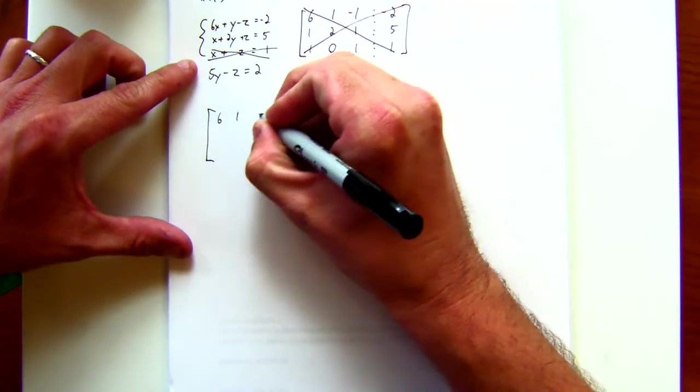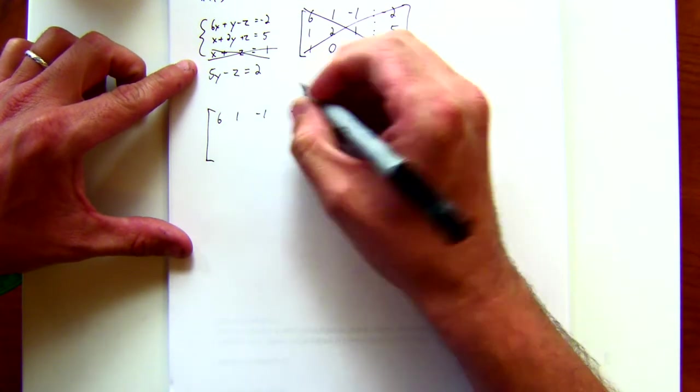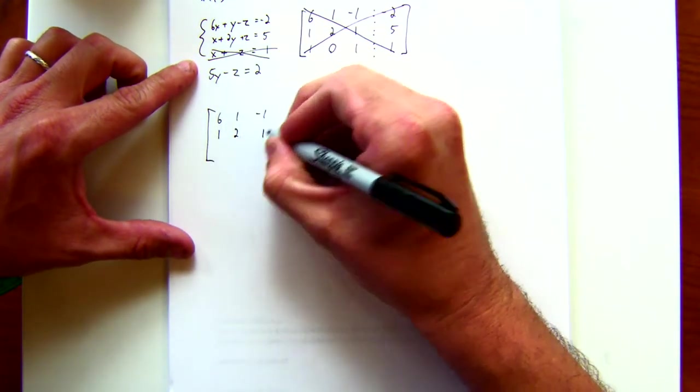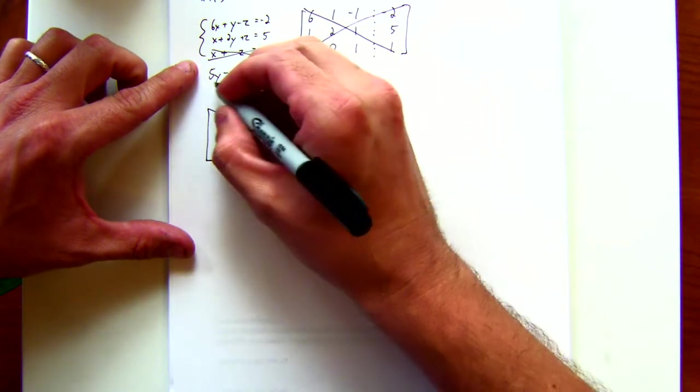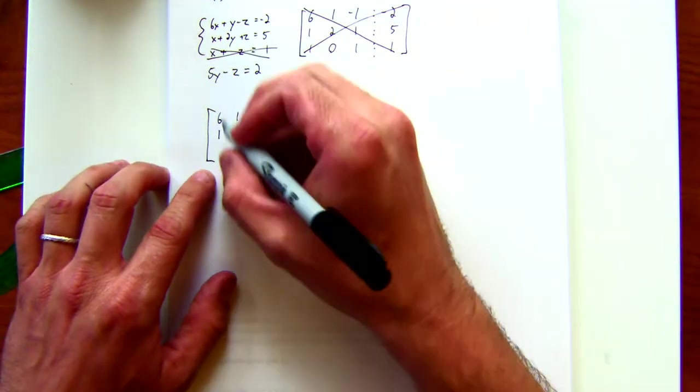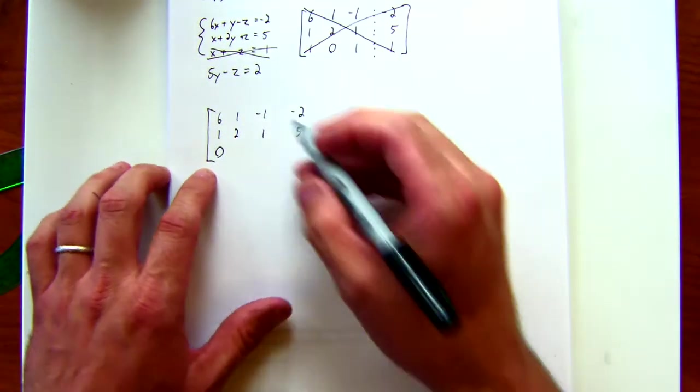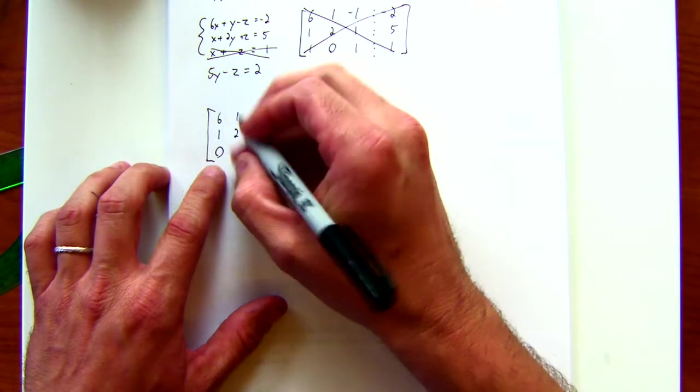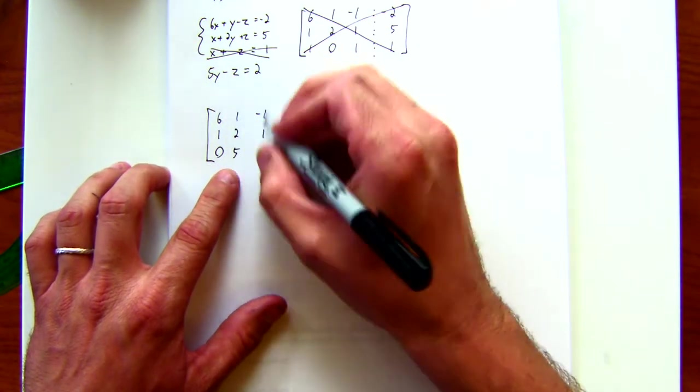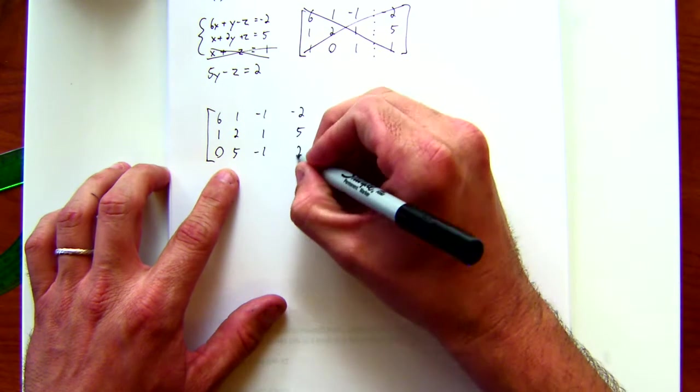Six, one, negative one, negative two. One, two, one, five. And now, what's my x here? Now my x is zero. And then my y is five. My z is a negative one and a constant of two.